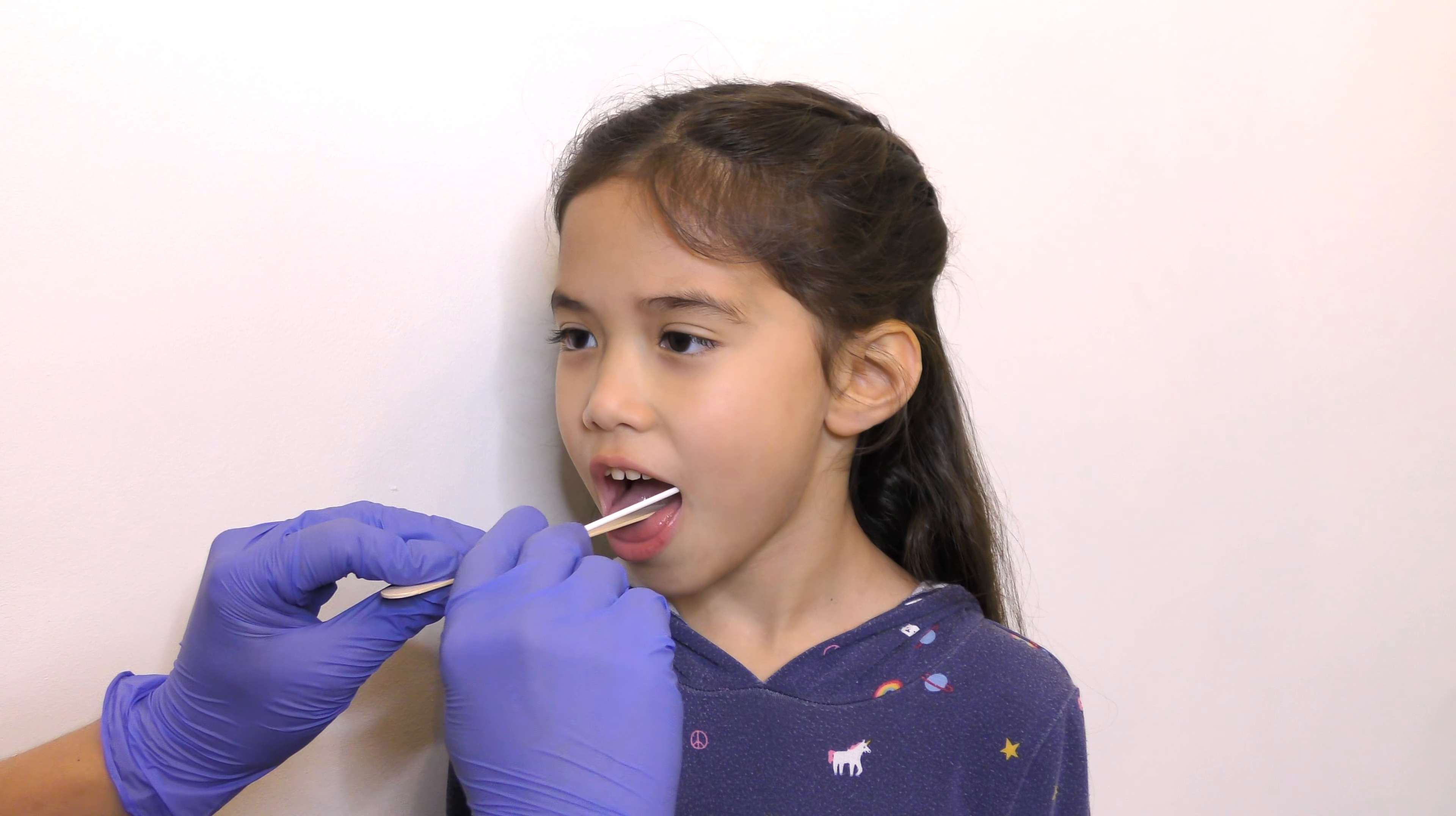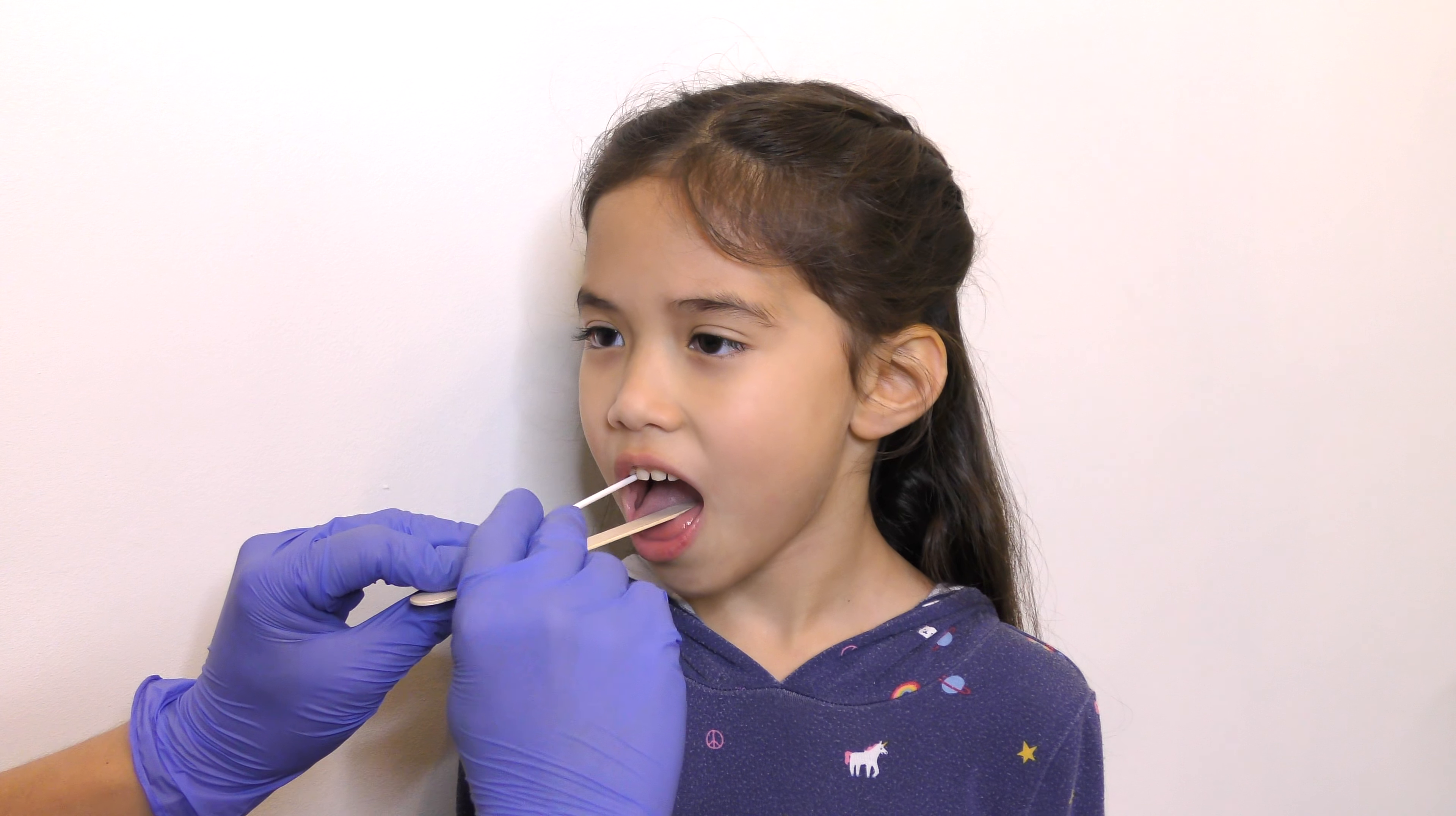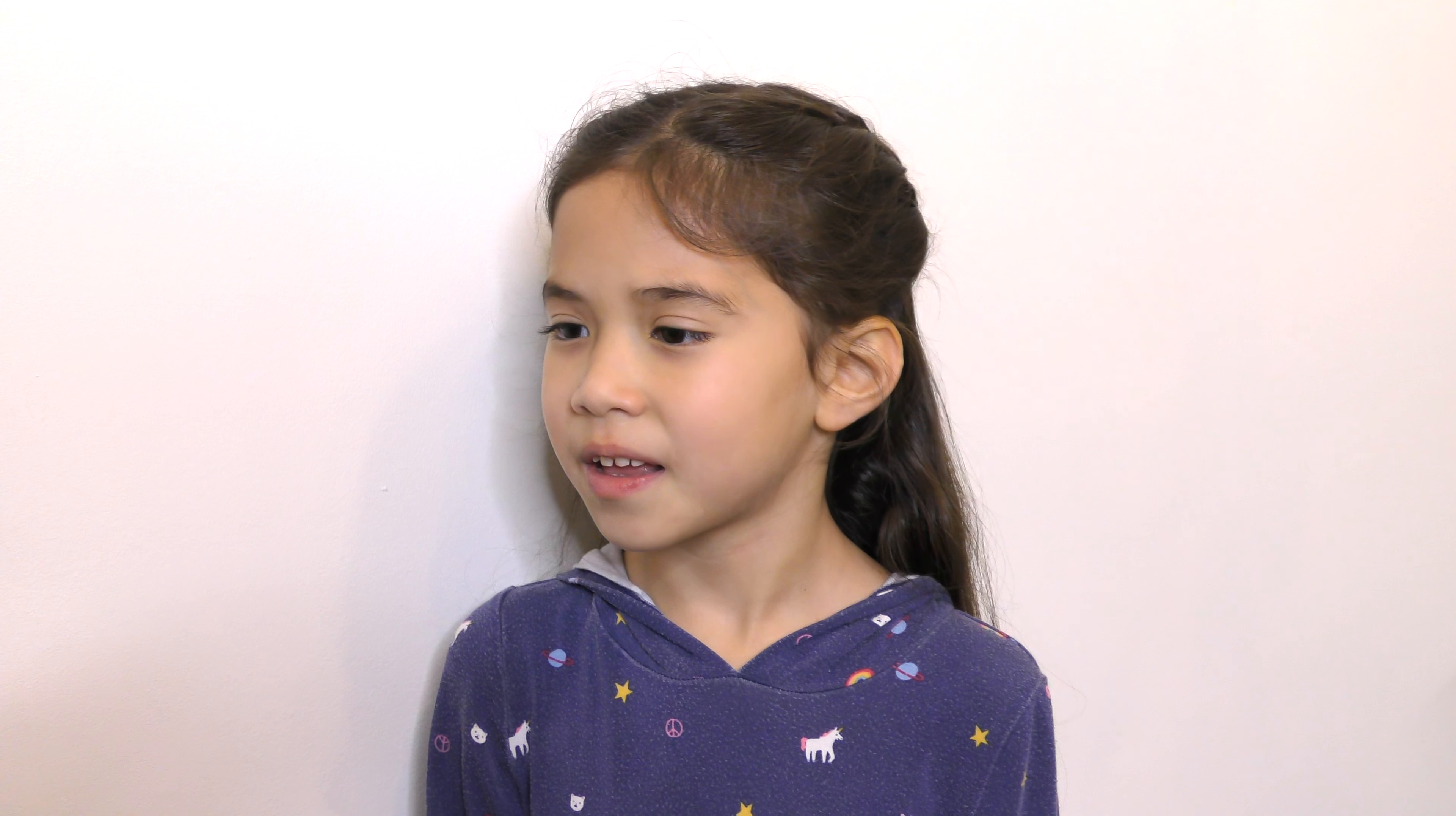A rapid strep test is performed by first swabbing the throat and running the test on the swab using a kit made specifically for this purpose.